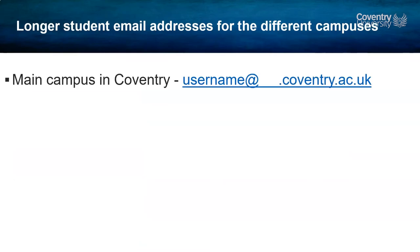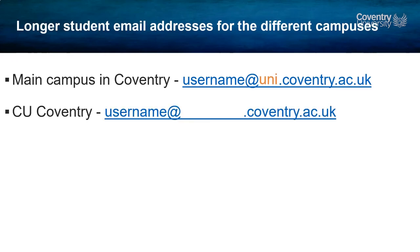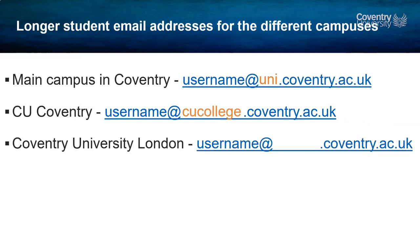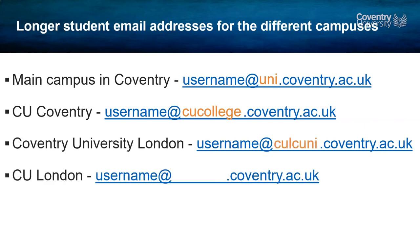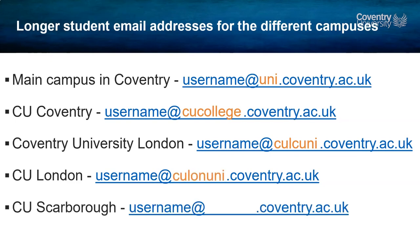Just to show how this works: for the main campus in Coventry, they all have 'uni' in the middle. If you're based at CU Coventry, it has 'CU College' in the middle. If you're based at Coventry University London, it has 'CULC Uni' in the middle. If you're based at CU London, it's 'CULON Uni'. And if you're based at CU Scarborough, it's 'CUSC Uni'. There's more information on this on the student portal once you get enrolled.